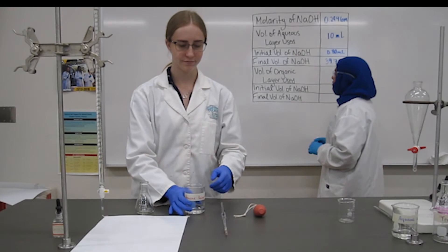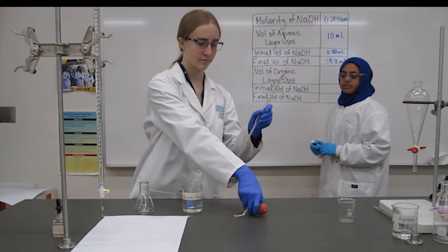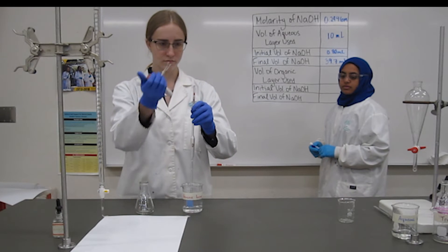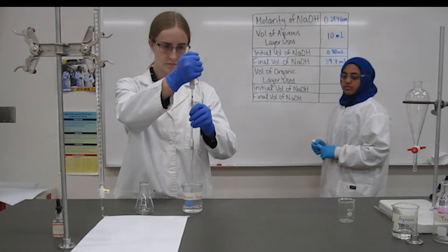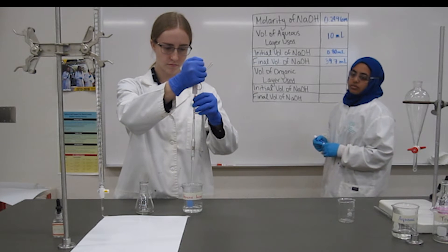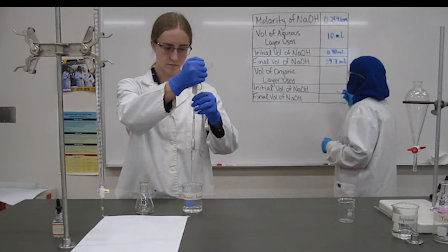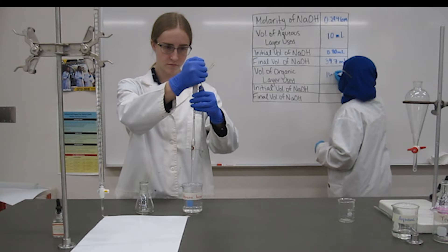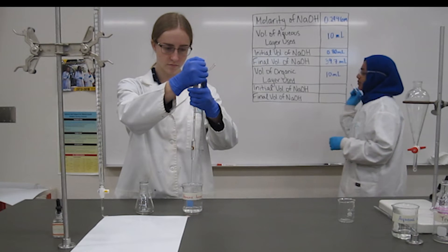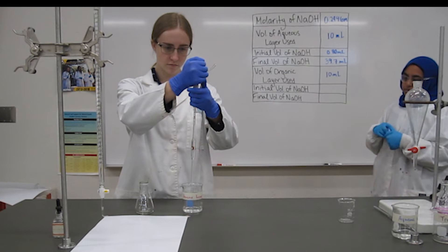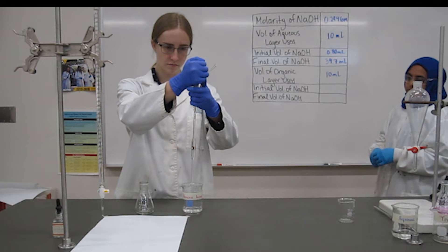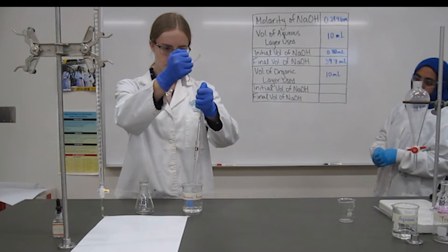The volume used would be exactly 10 milliliters. Titrating the organic layer is very similar. Using your 10 milliliter volumetric pipette again, attain 10 milliliters of the organic layer, which in this case is hexane. Therefore, the volume used would be exactly 10 milliliters. Once obtained, place that in your Erlenmeyer flask.